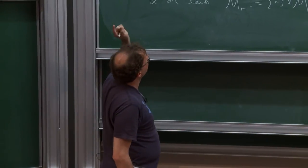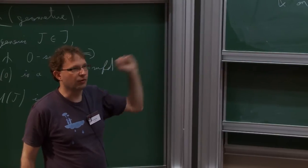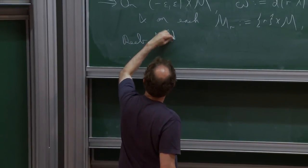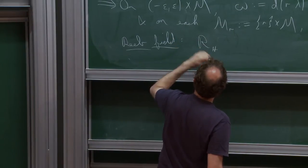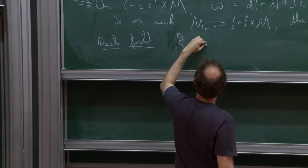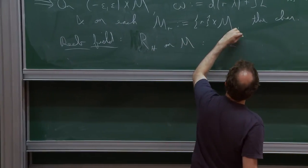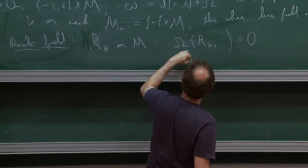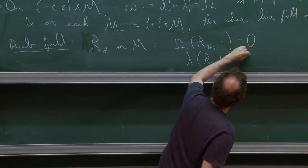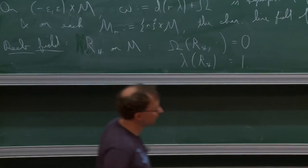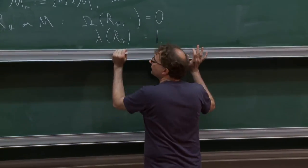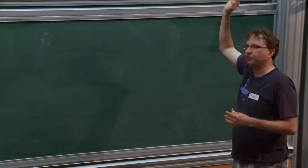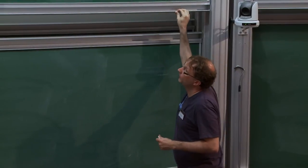So from this data, we have also a canonical generator of the characteristic line field, which by analogy with contact forms, we'll call the Reeb vector field. My notation will be R_H, and it's determined by the conditions: omega annihilates the direction of the Reeb vector field, and then we normalize it by lambda. Audience: Is there any reason d lambda couldn't be zero? Speaker: No, there's no reason at all why d lambda couldn't be zero. So we have a stable Hamiltonian structure. It defines this hyperplane distribution Xi, which might be a contact structure in certain examples, but it doesn't have to be — could also be a foliation. We have this Reeb vector field.